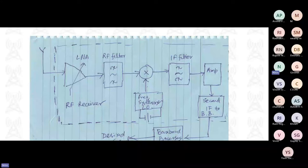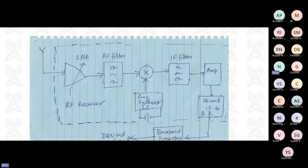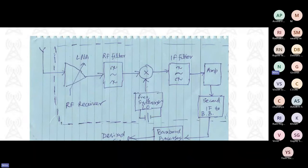Basically, in any radio receiver system, we have two types of sections. One is of course the antenna, and then we have the radio frequency components — what we call generally radio. Then we have baseband processing. The signal is brought down to baseband, meaning the center carrier frequency is DC and around that we have all the signals. Typically it has been either in analog form or digital samples, and then finally we get our desired signal.